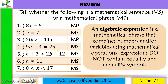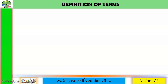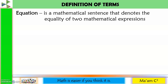Both sides of the equation are called expressions. If it has inequality symbols, we call it an algebraic inequality, and it is also a mathematical sentence. Let us define some terms. An equation is a mathematical sentence that denotes the equality of two mathematical expressions.